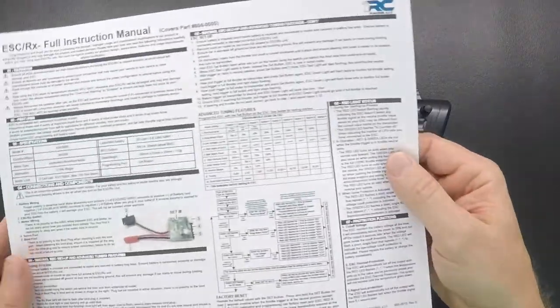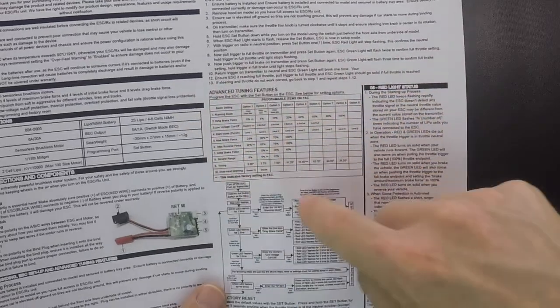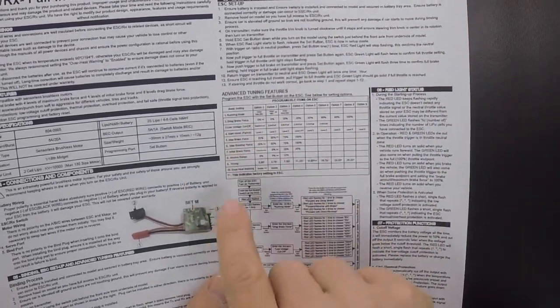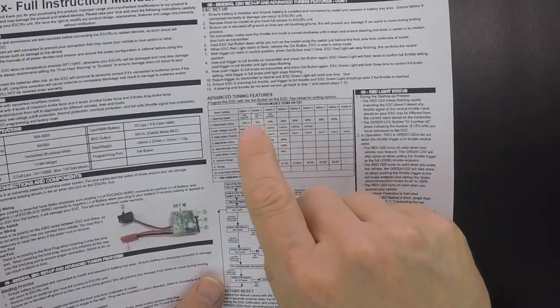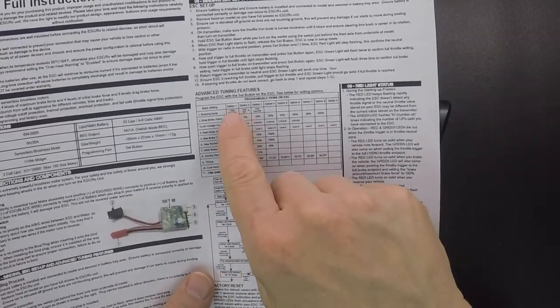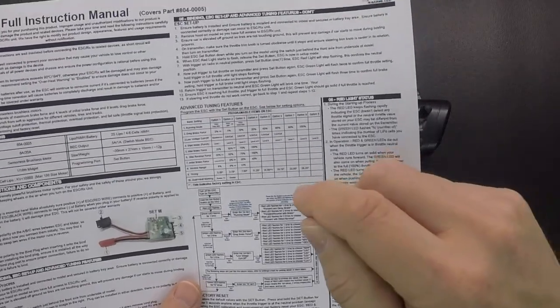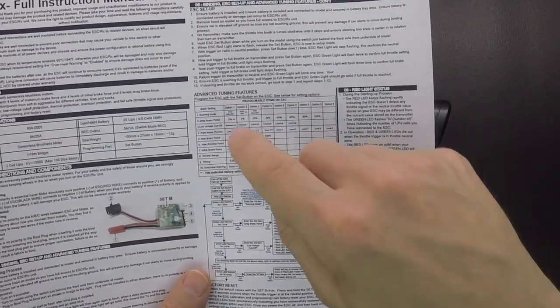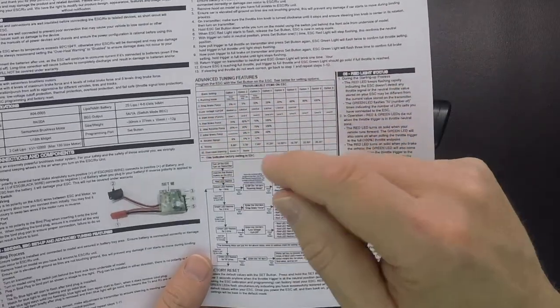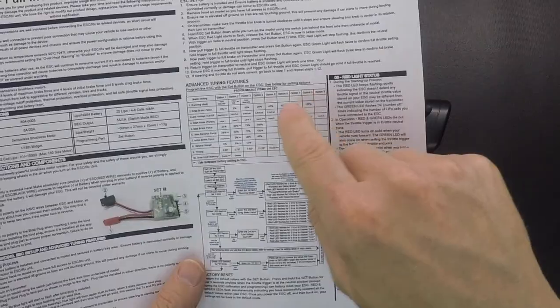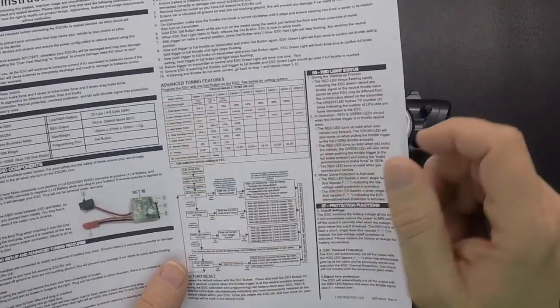So if you look at the setup sheet in this section right here, it has the setting here. So you have 1 through 10 and then once we get a little bit farther in, then it has the options for each one of those settings. So you're going to hold the button down, wait till the green light blinks and each time that blinks, that's going to go into the setting mode. When you release that button, then it's going to go into what option under that setting you're in.